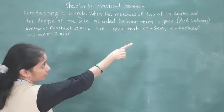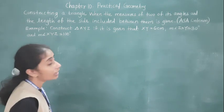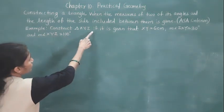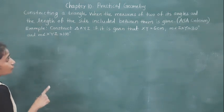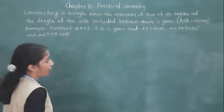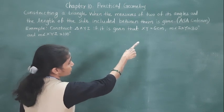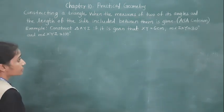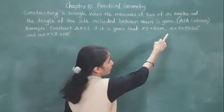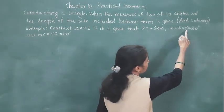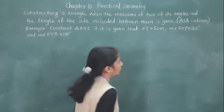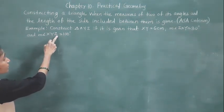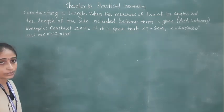By which criteria can we construct this triangle? ASA criteria. Now, example: Construct triangle XYZ. It is given that XY is equal to 6 cm, measure angle ZXY is equal to 30 degrees, and measure angle XYZ is equal to 100 degrees.